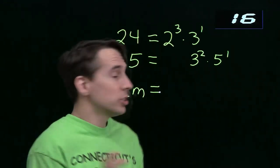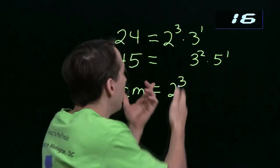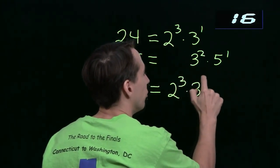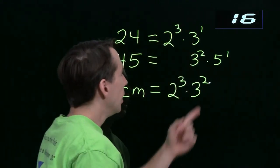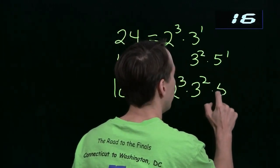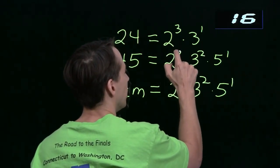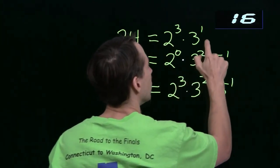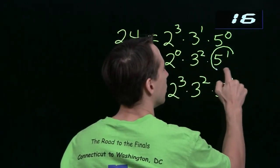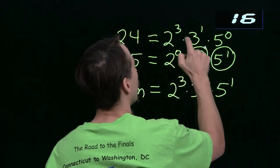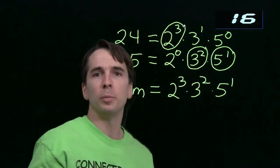In order to be a multiple of 24, we need at least three 2s, so we stick in 2 to the third. For the 3s, all I need are two 3s, because I need at least two 3s for 45, and once I've got two 3s, 24 is taken care of since I have more than one 3. And I need the one 5 for 45. If we stick in the missing primes at the zero power — since anything to the zero power is 1 — one way to think about this is we're just taking the largest power of each prime that appears: 2 cubed, 3 squared, and 5 to the first, and that builds the least common multiple.